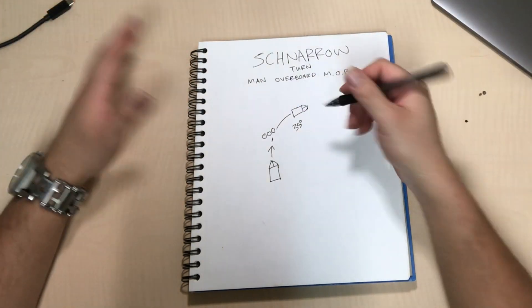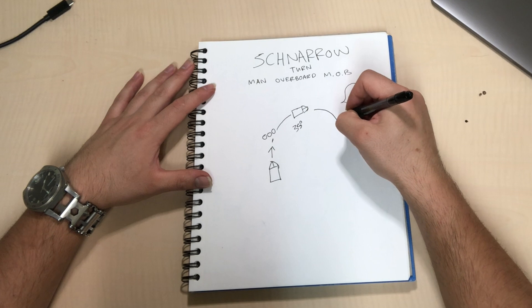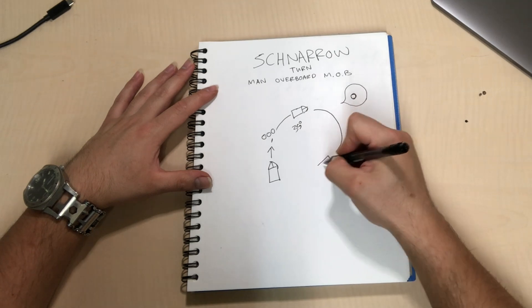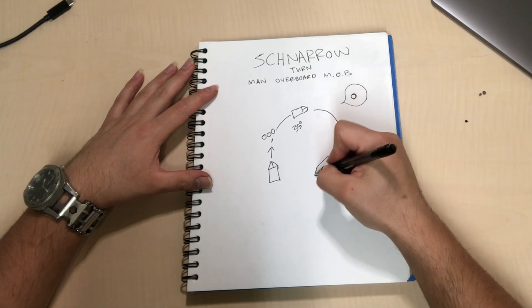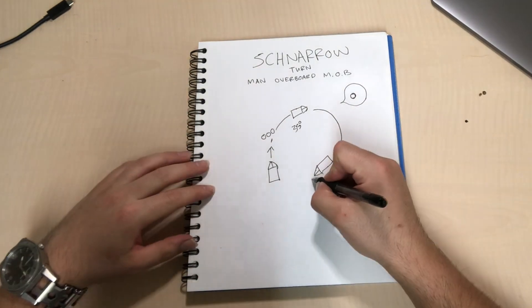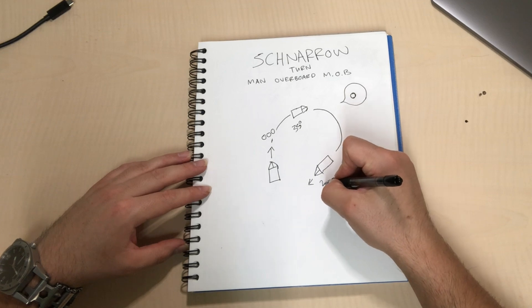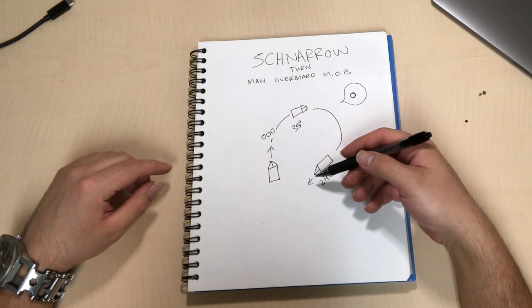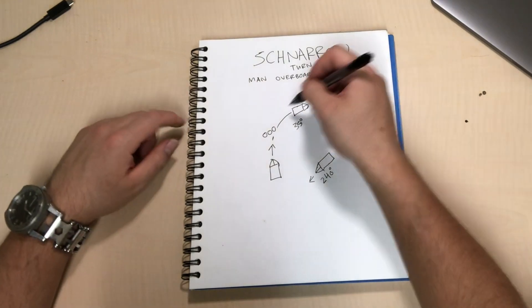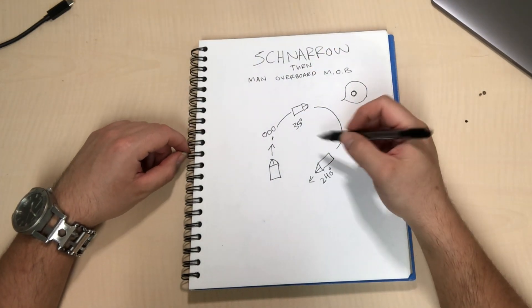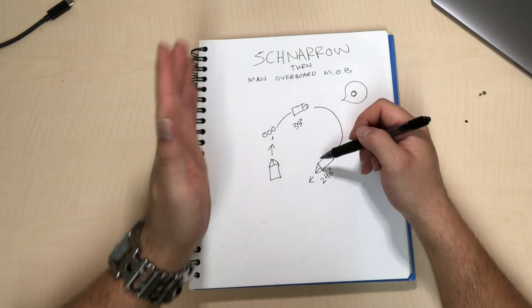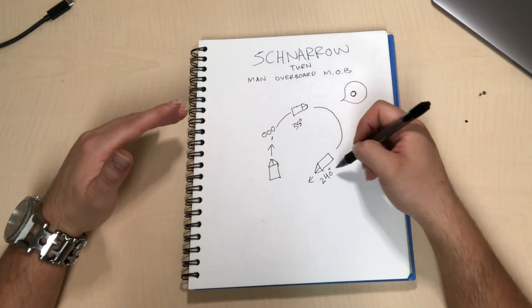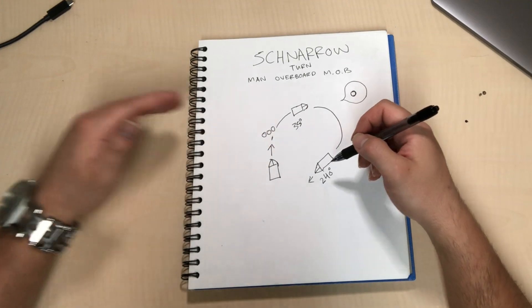And then you're gonna come all the way around till roughly 240 degrees. And this is why I did say we're going zero zero zero, because you're gonna come over to 240 degrees. Now whatever you're going, if you're going zero nine zero or whatever, you're gonna want to come over to 240 degrees over from your original course.